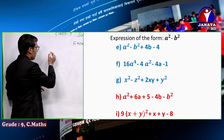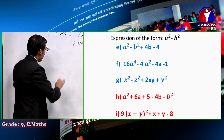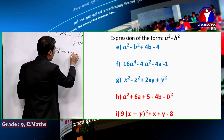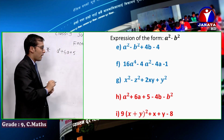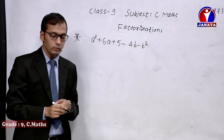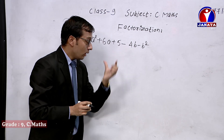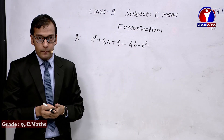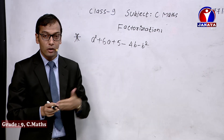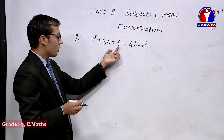Let me write the first question for today's topic. The expression is: a² + 6a + 5 − 4b − b². This algebraic expression has five terms — four are variable-containing terms and one is a constant. Five is the constant term.